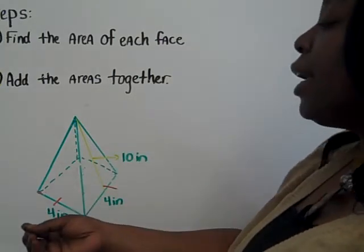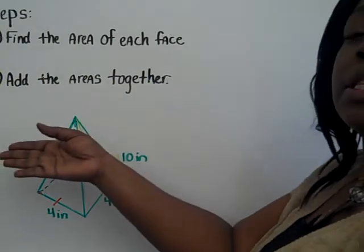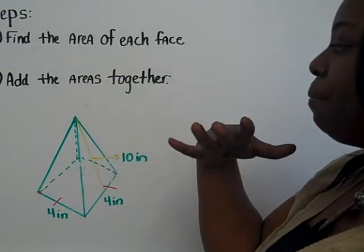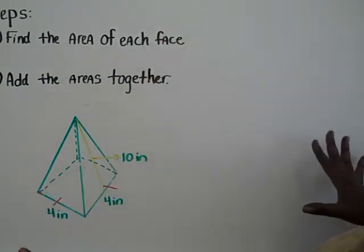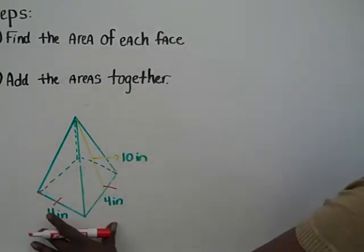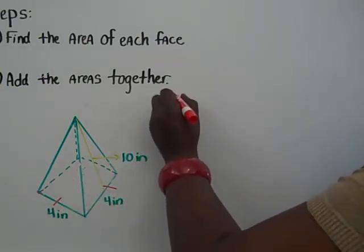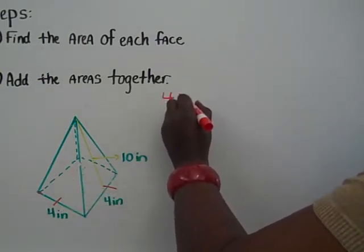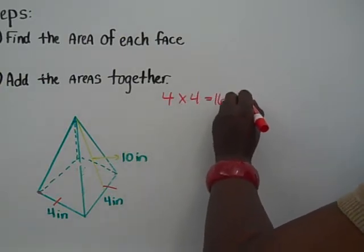So if you would like, you could stop and draw the net before you begin the steps. Or you can just visualize it in your head. I'm just going to go ahead and find the area of each face without the net. I know this is a square pyramid, so the bottom is a square. It's a 4 by 4, which means the area of the square is 16, of course, inches squared.